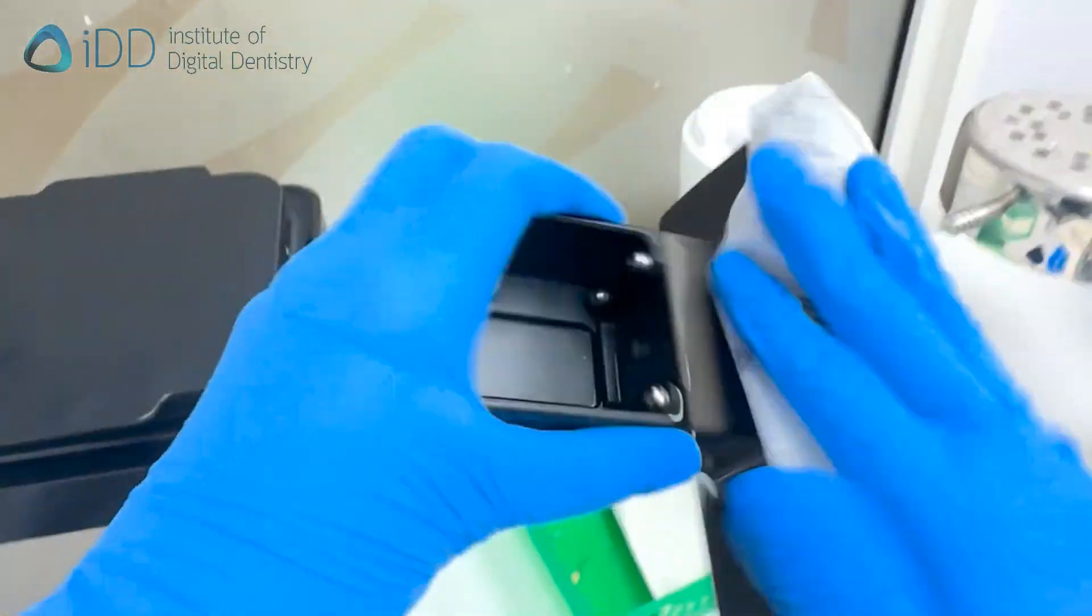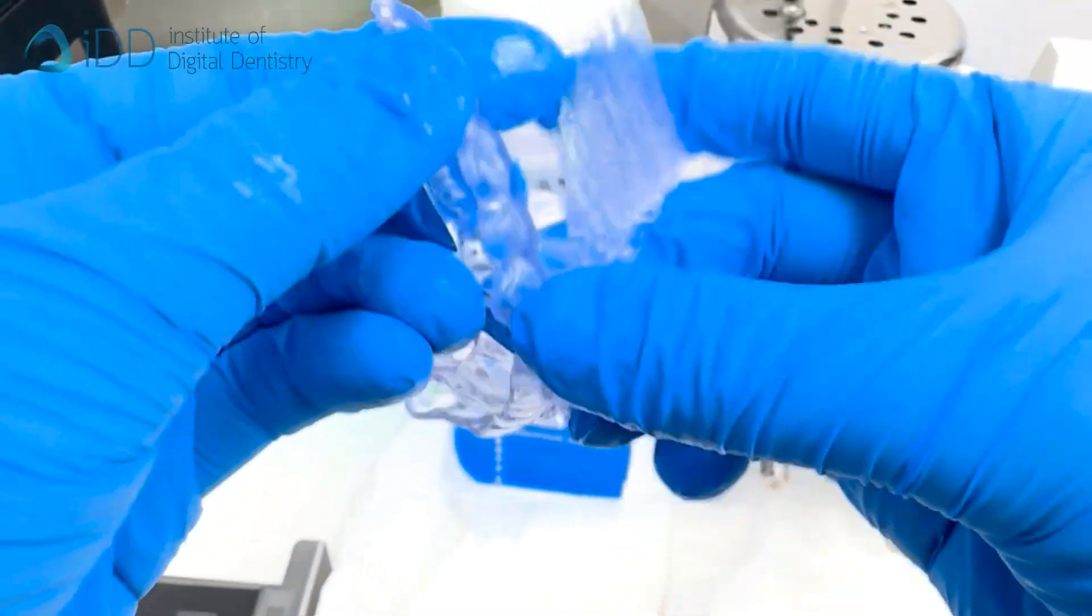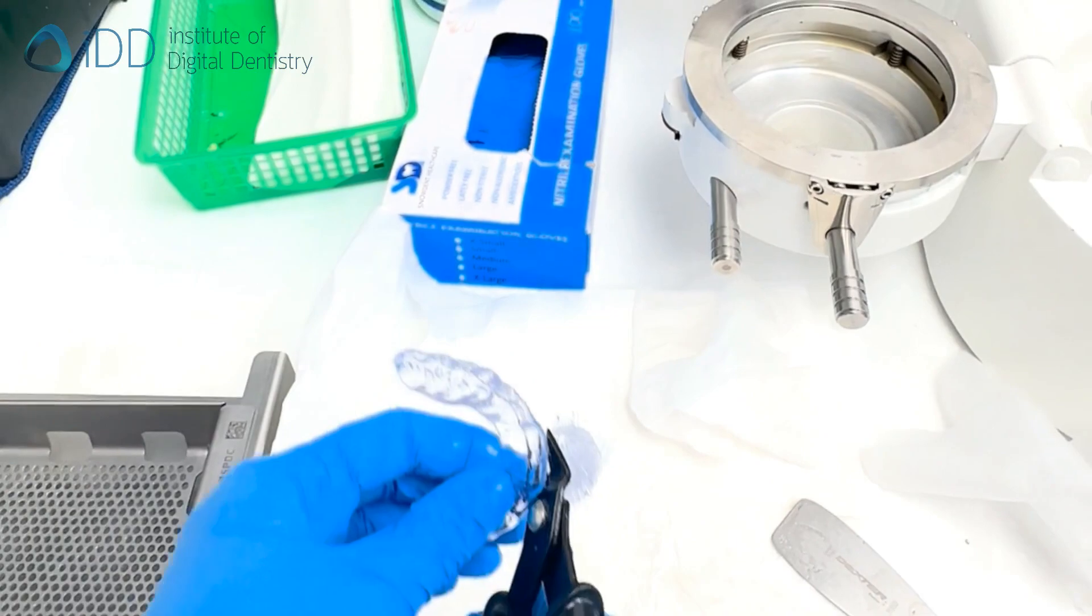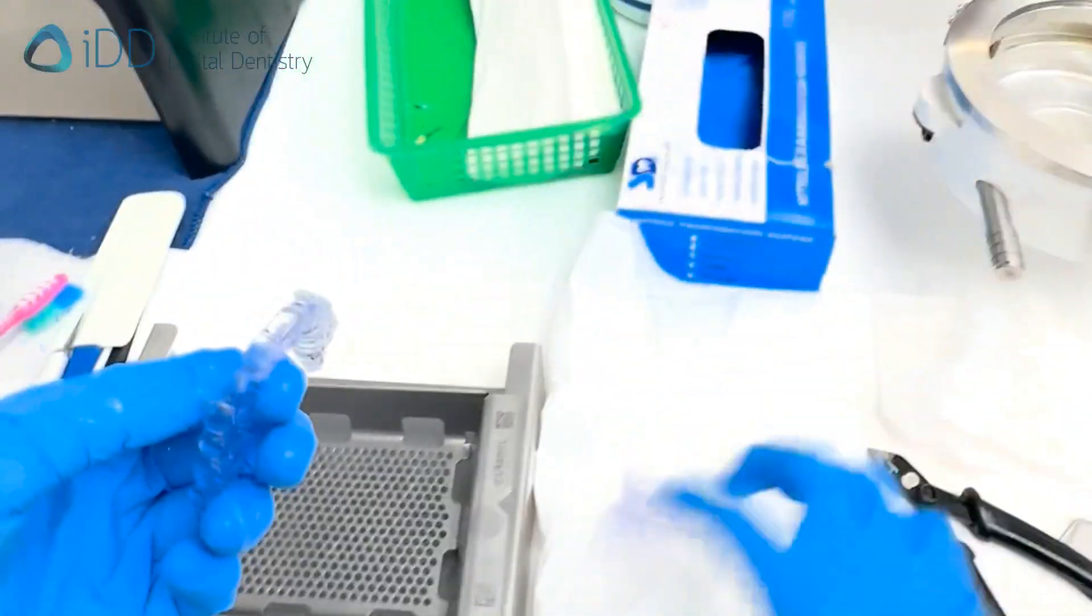Then clean the platform so it can be used again later. As you can see, most of the printing supports come off very easily, but some we have to remove using pliers.